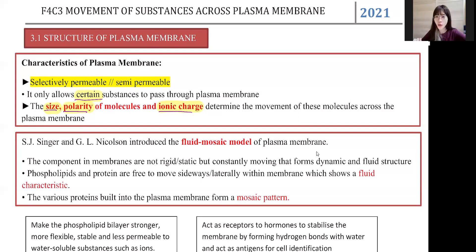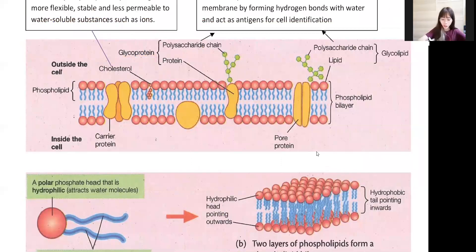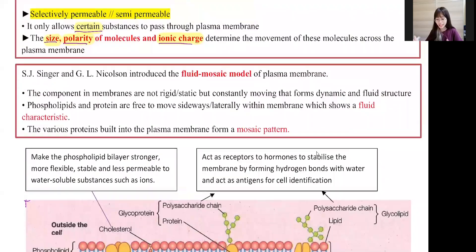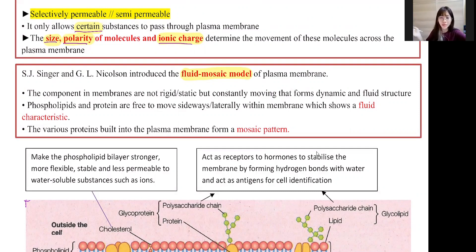Now you also need to know about the structure of the plasma membrane. If you look at this diagram, it shows a zoomed-in version of the plasma membrane. The question is: what is this plasma membrane model called? There are two scientists who named it — S.J. Singer and G.L. Nicolson. The name they gave it is the fluid mosaic model. Just like how your parents named you for a reason, this model also has a reason behind its name.